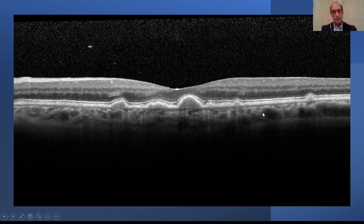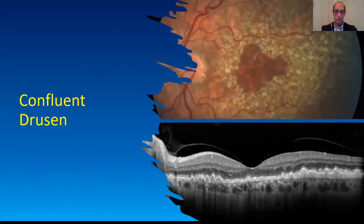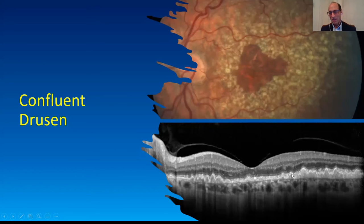The other characterization is confluent drusen, which is just soft drusen running together. This is one of my patients with a lot of drusen — they're absent in the middle. Here's where drusen are absent, and then you get these confluent drusen just running together. You can see Bruch's membrane back here, then your RPE up here, and then all this material underneath.